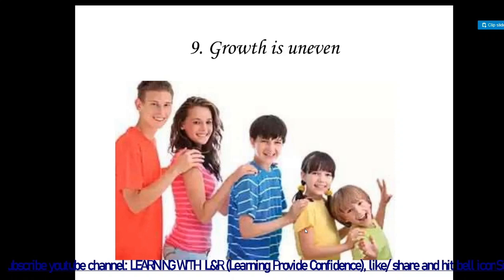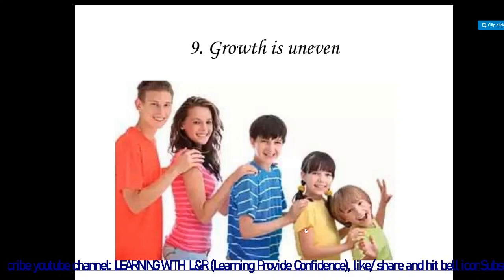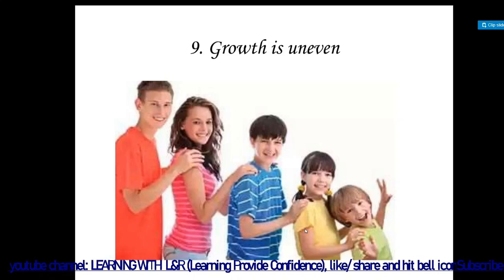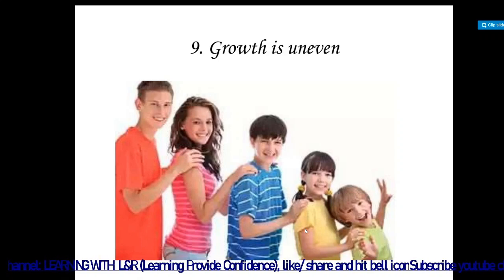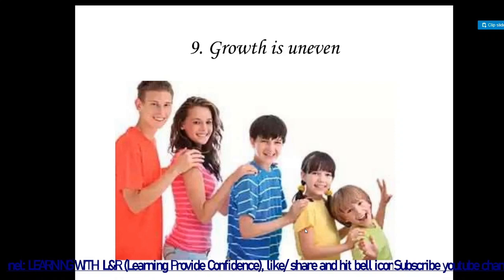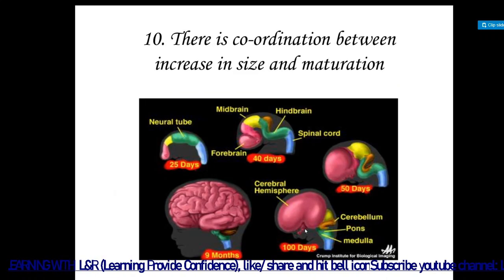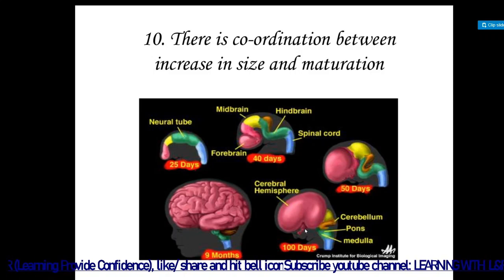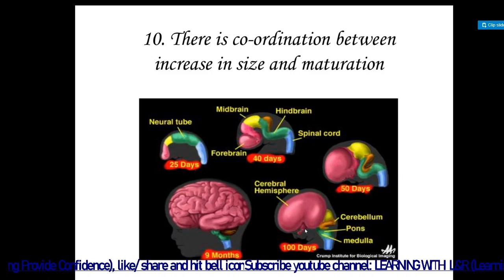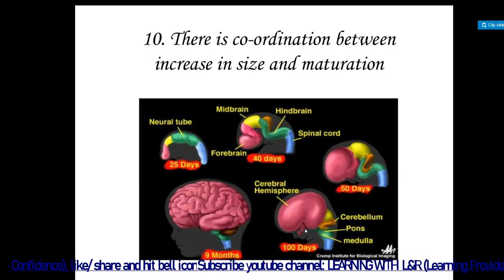Growth is also uneven — it is not equal in all children; everyone has their own style of growth and development. There is coordination between increasing sizes and maturation. With the help of an image, you can see that at 25 days of conception only the neural tube develops, after that other parts develop, and by nine months the anatomy of the brain is fully developed.